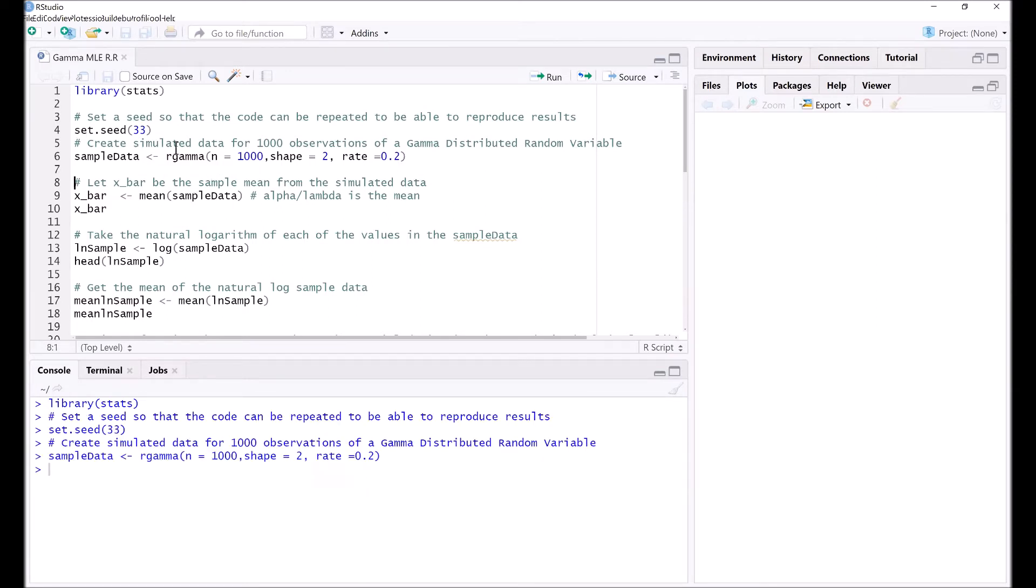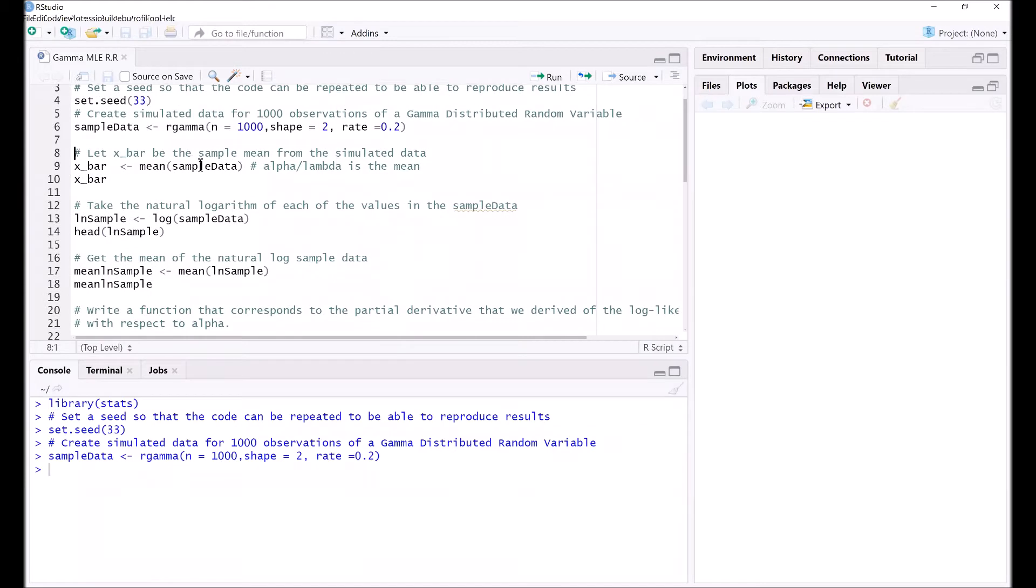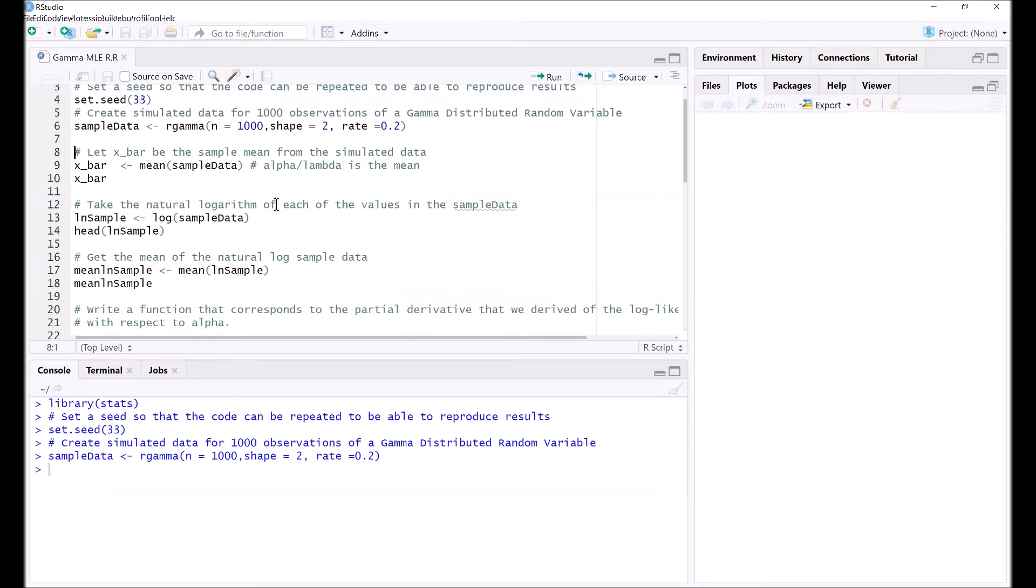The sample data is a random sample from a gamma distribution with a shape parameter of 2, a rate parameter of 0.2, and 1,000 observations are taken from that gamma distributed random variable. Then we need x-bar, the sample mean from this simulated data. The value of x-bar is 9.92.